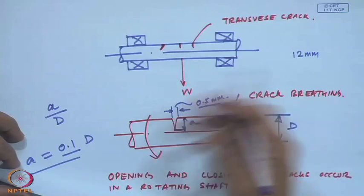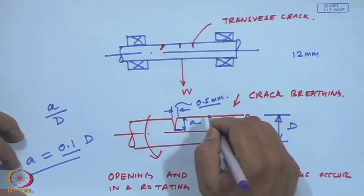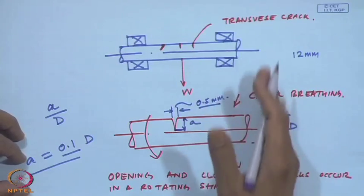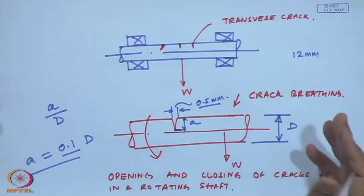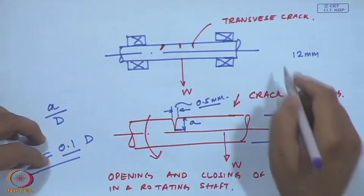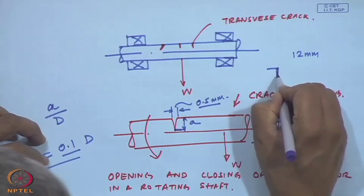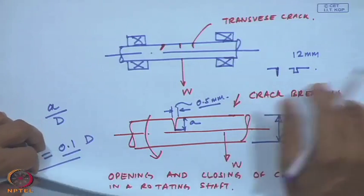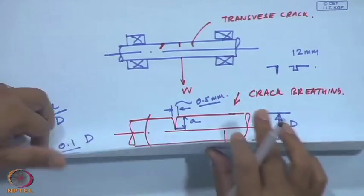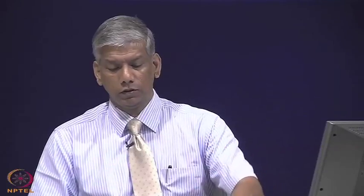In our laboratory we have done experiments using a hacksaw to cut a slot and make a crack — that is a massive crack compared to real hairline cracks. Usually these cracks are hairline cracks. This type of crack is known as the transverse crack, caused by flexural loading on the shaft.